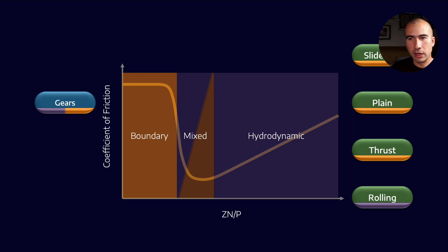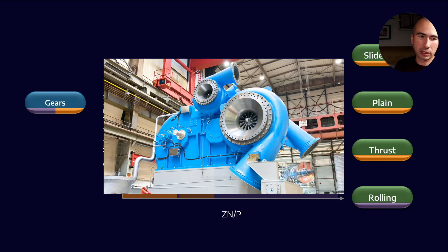And now what we're left with is gears, slideways, plane, thrust, and rolling element bearings. There's not that many gears in most compressors. However, we do have, for example, in the case of some large centrifugal compressors, integrally geared systems.